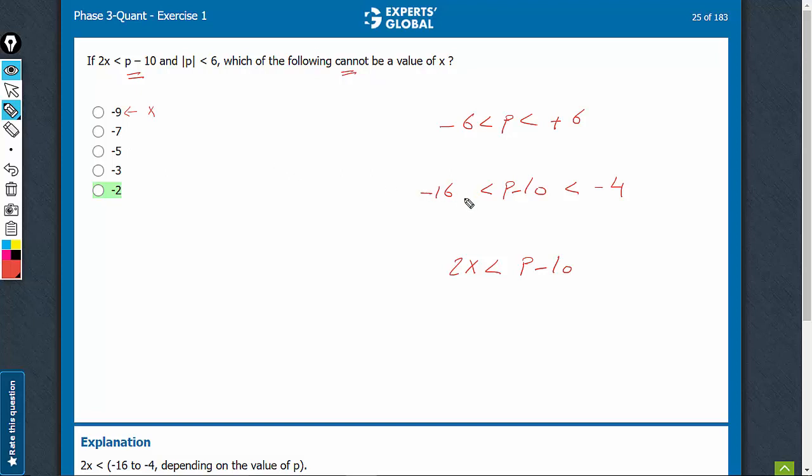Minus 7, double it: negative 14 lies in this range, so it's possible and should be eliminated. Double minus 5, it becomes minus 10, which is in this range and possible, so it should be eliminated. Double minus 3 becomes minus 6, which is in this range, so it's possible and should be eliminated.